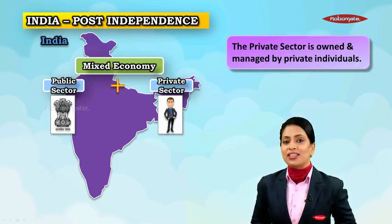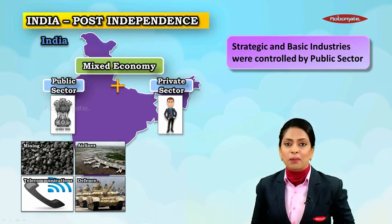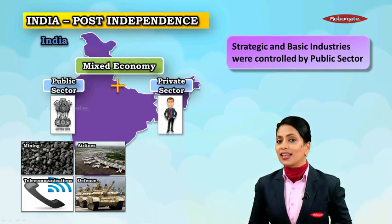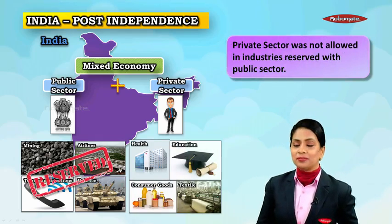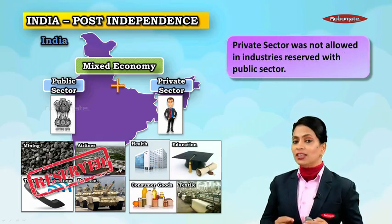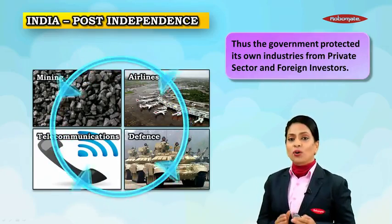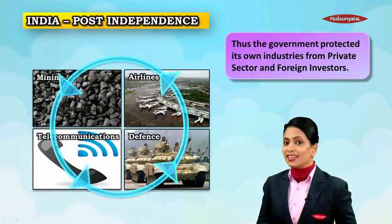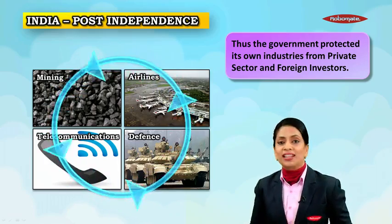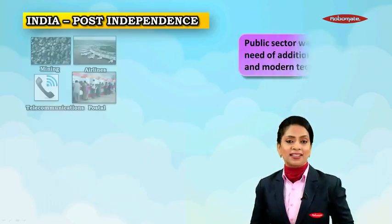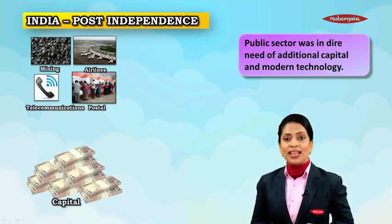In a mixed economy, the public and private sectors co-exist. The public sector is owned and run by the government, while the private sector is owned and managed by private individuals. Strategic and basic industries were controlled by the public sector — for example, defense, telecommunications, and railways. Other industries were controlled by the private sector, but the private sector was not allowed in industries reserved for the public sector. The government also protected its own industries from private sector and foreign investment, fearing these industries were more profit-motivated than welfare-oriented.